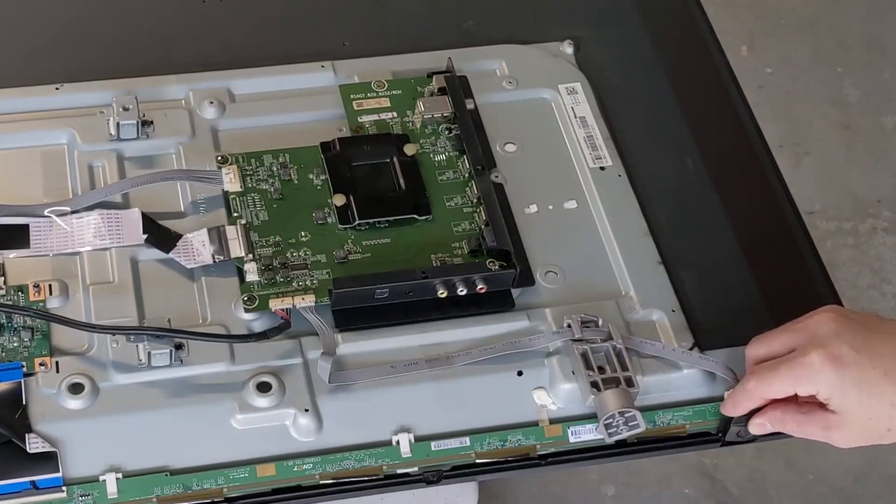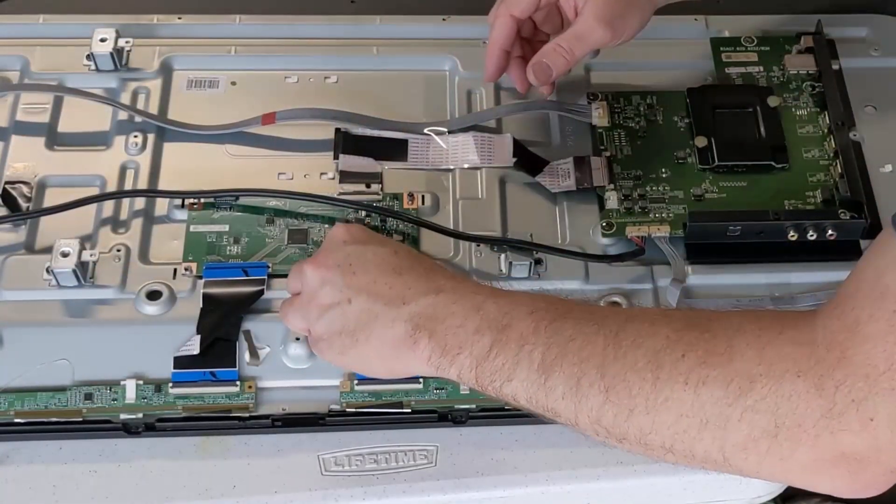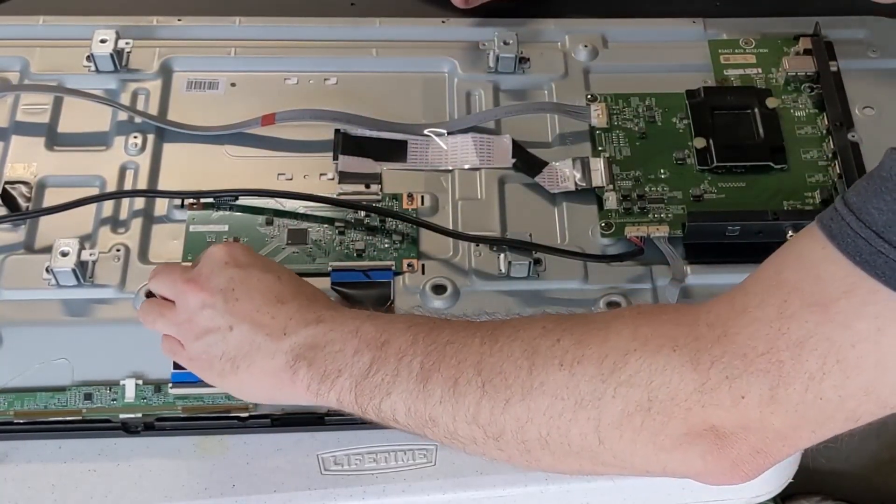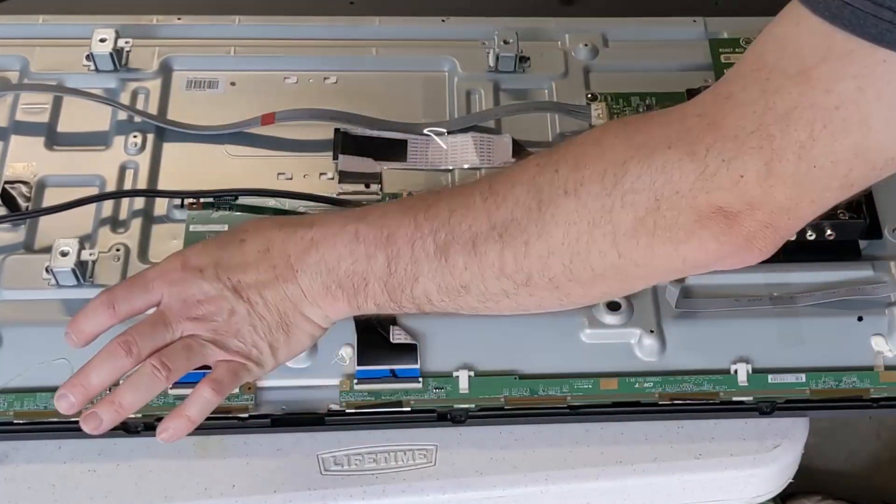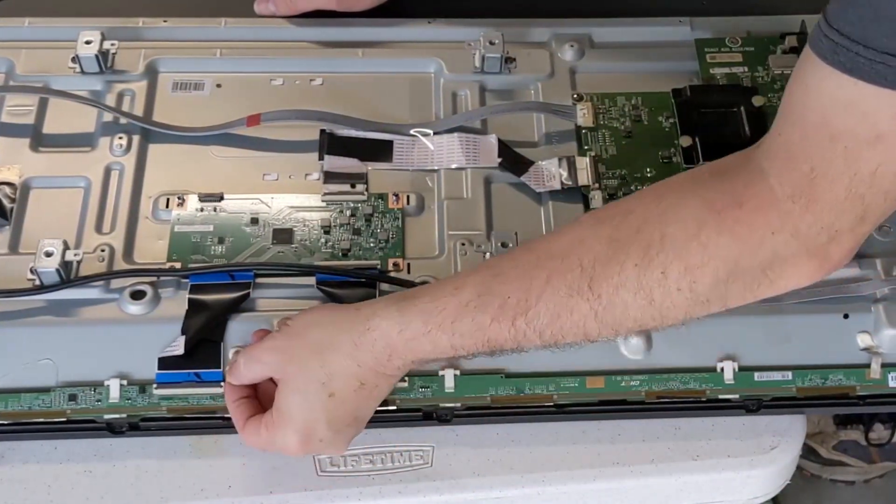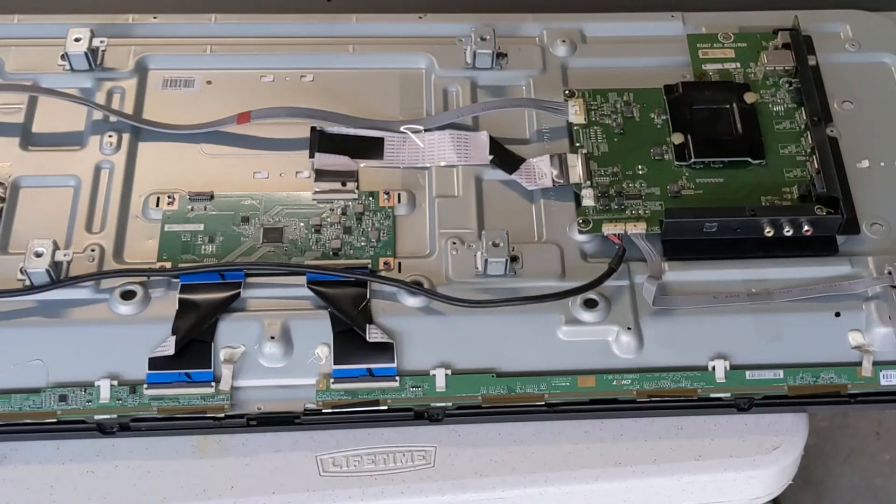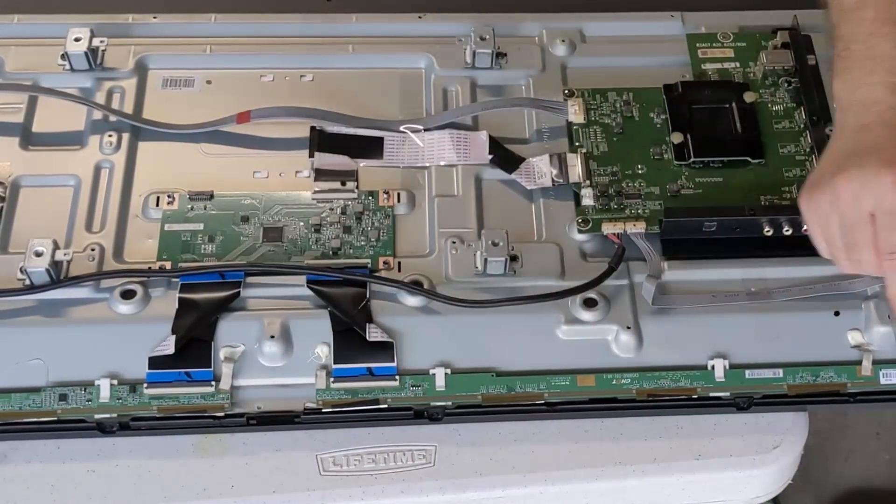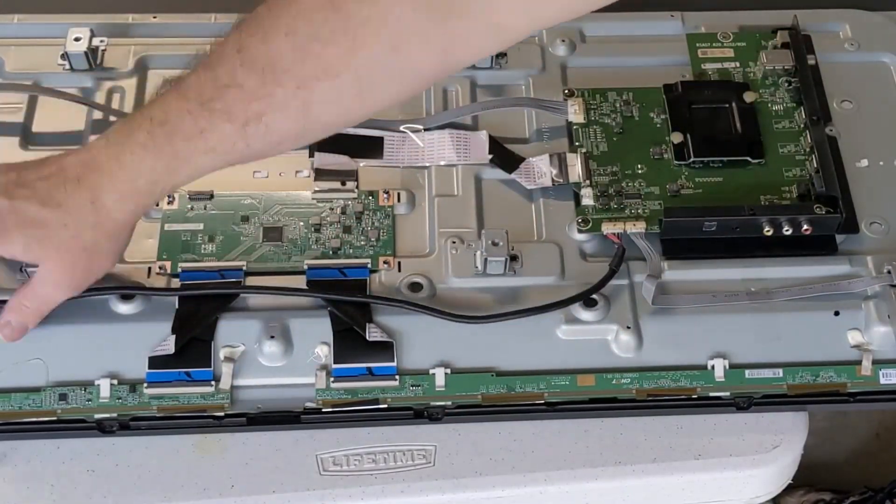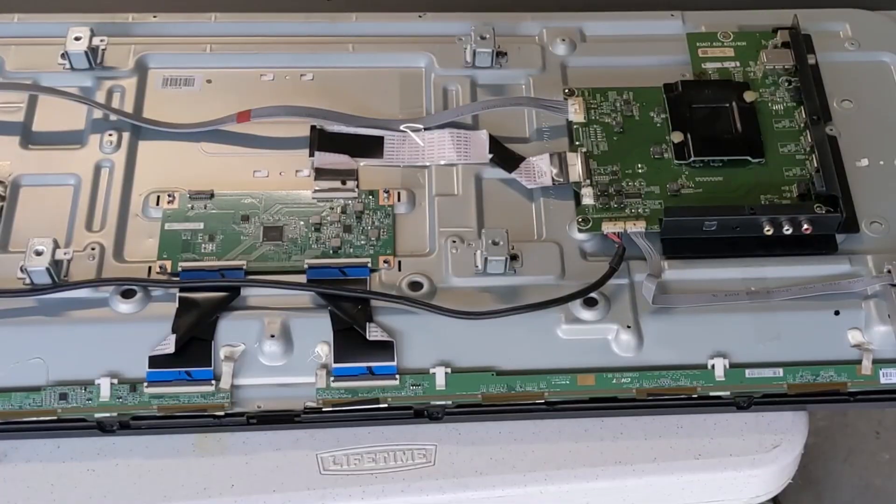We should be able to pop our power button back on. Go ahead and hook up our ribbon cable to our T-Con board. Push it down. And the line-up line should be almost flush with the edge of the connector there. We also have some of the ground and straps. It's like tape, as you see here. It just goes to our gold-plated corners on our board. But there's two or three of these across each board to connect back, stick back on there. And we'll put back on our speaker assembly.